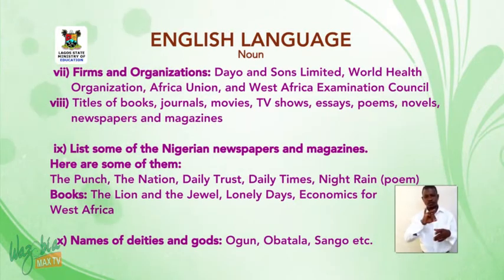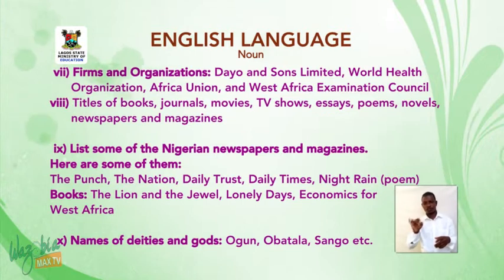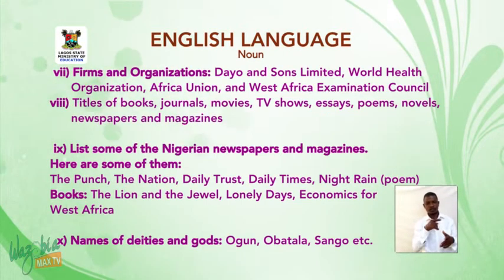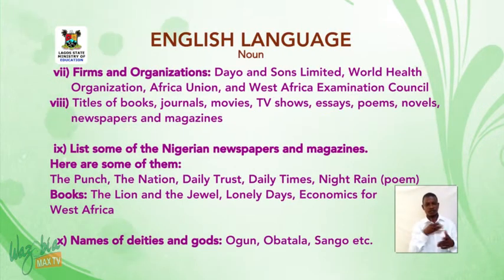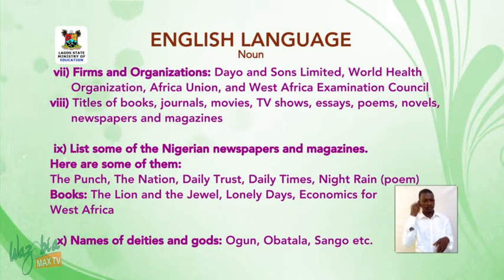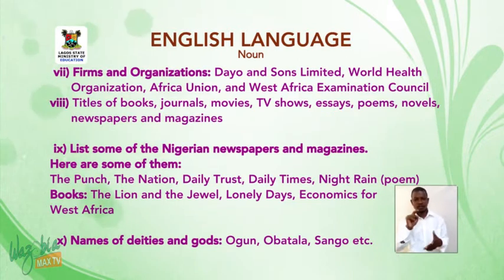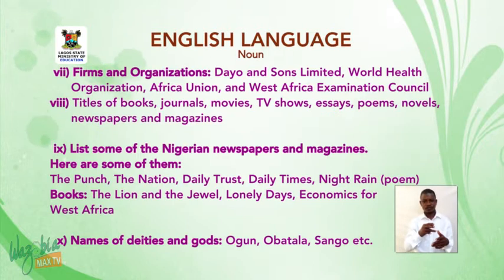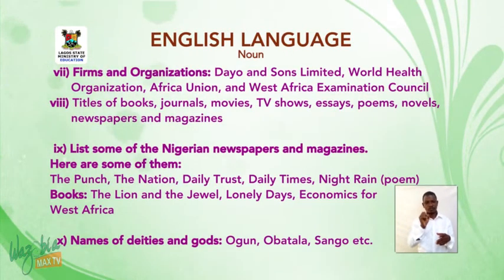Titles of books, journals, movies, TV shows, essays, poems, novels, newspapers, and magazines. List some of the Nigerian newspapers and magazines. Here are some of them: The Punch, The Nation, Daily Trust, Daily Times, Night Rain — that's a poem. Books: The Lion and the Jewel, Lonely Days, Economics for West Africa.